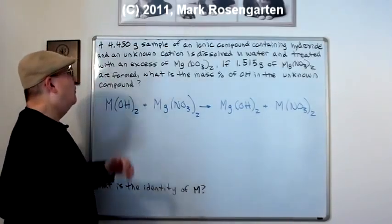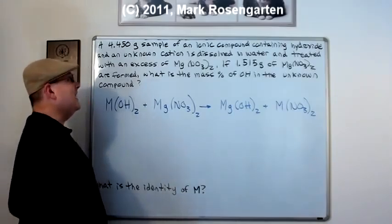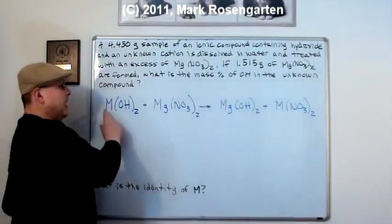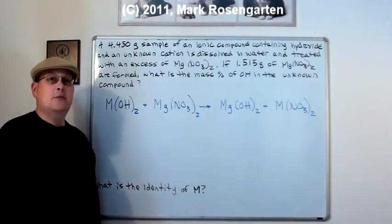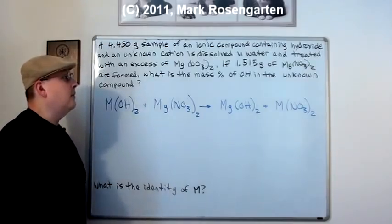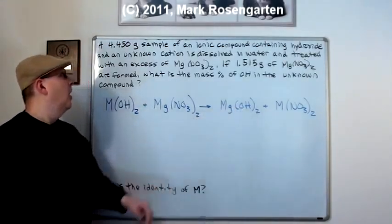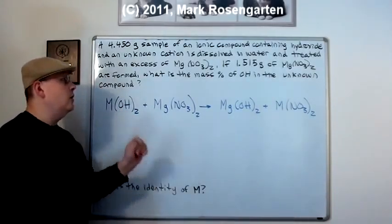The question is, a 4.450 gram sample of an ionic compound containing hydroxide, that's this, and an unknown cation, that's this, is dissolved in water and treated with an excess of magnesium nitrate. If 1.515 grams of magnesium hydroxide are formed, what is the mass percent of hydroxide in the unknown compound?